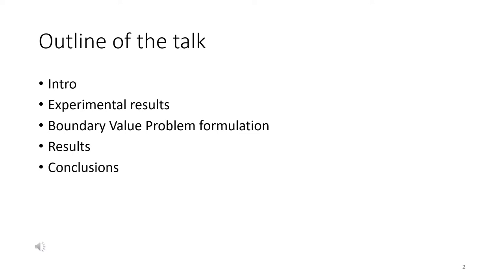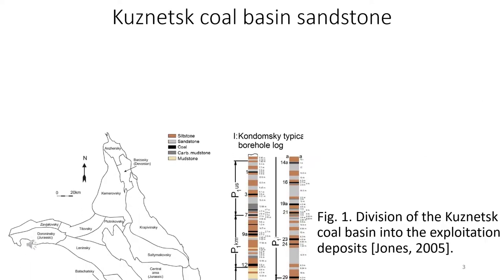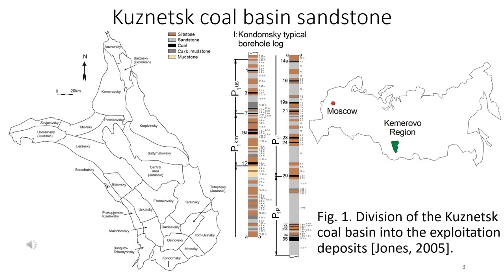Study of failure of sandstone samples remains important for solving particular engineering problems, as sandstone is often found in several engineering fields such as production of oil and gas, coal, and other natural resources. In the slide you can see an outline of the Kuznetsk coal basin and a typical borehole log. Sandstone is often encountered as a component of the roof of several coal seams.